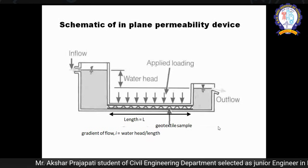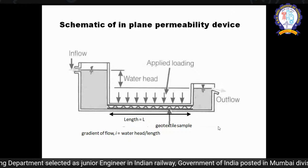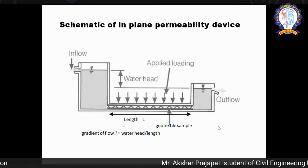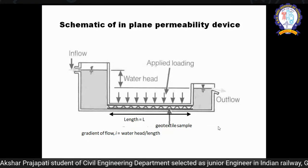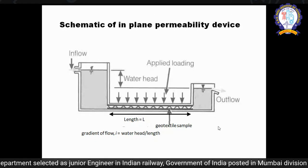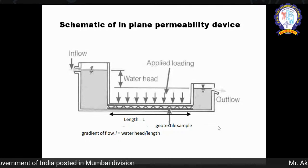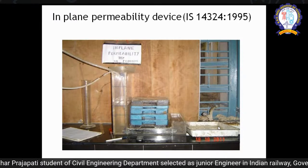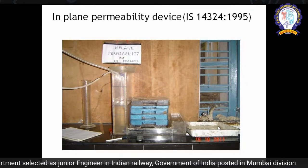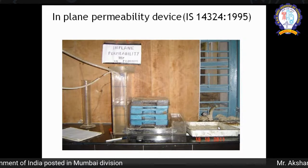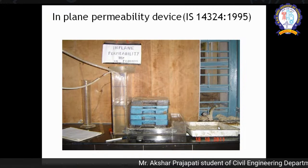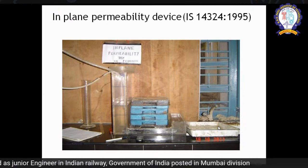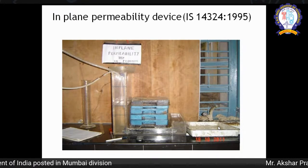This is an example of an in-plane permeability device. On the left side the gradient is higher and on the right side the head is lower, so water flows from left to right. The geotextile is sandwiched between two layers and a load is applied, because you must check behavior under practical loading conditions. You must test how much water flows laterally through the geosynthetic under real load. It is very important to check application-based properties; otherwise, the project will not be credible.